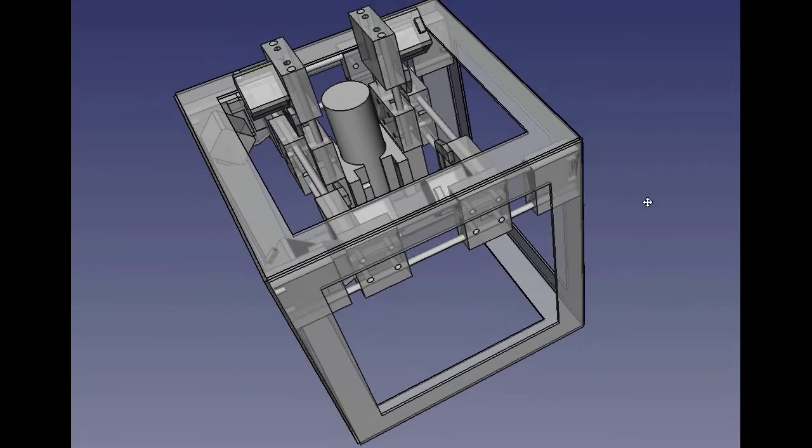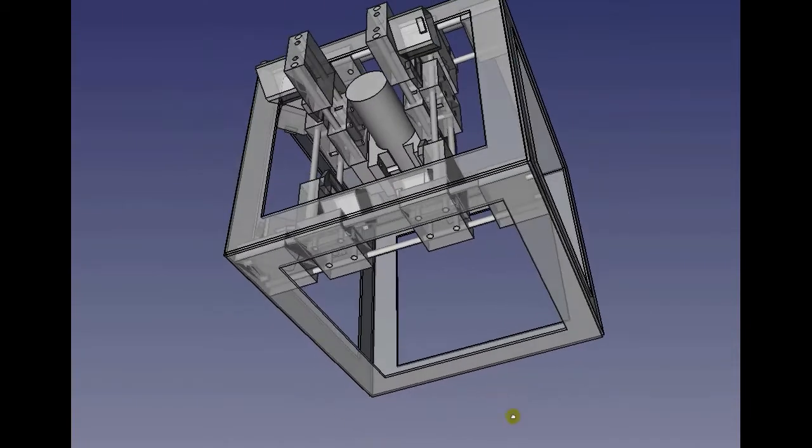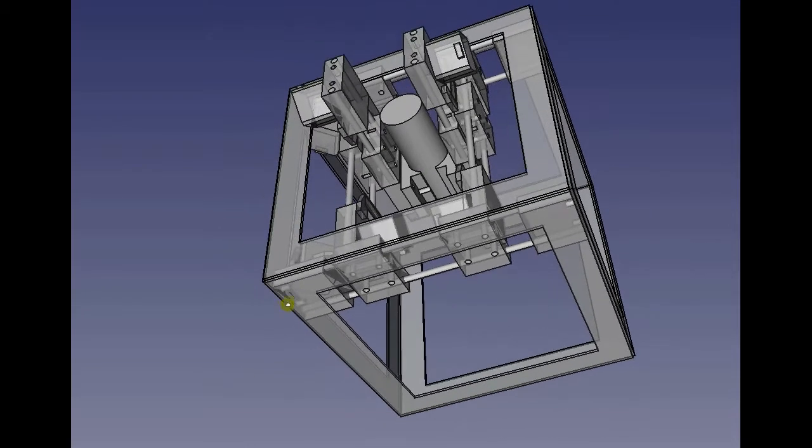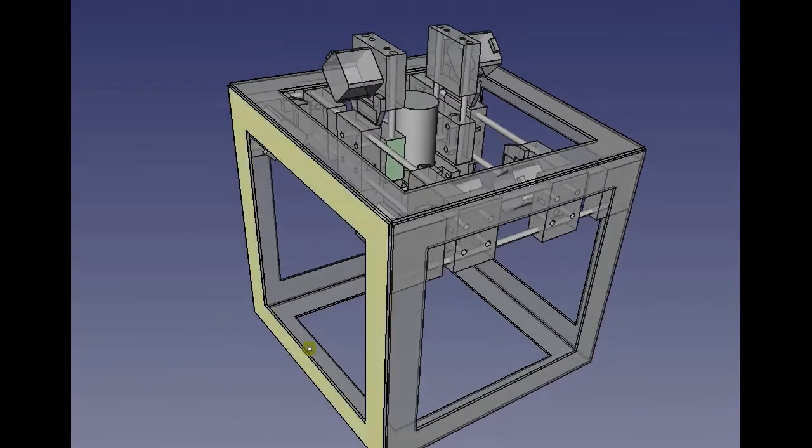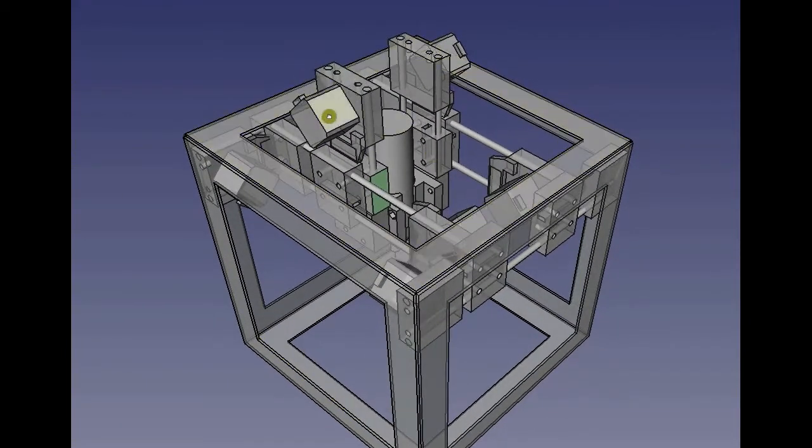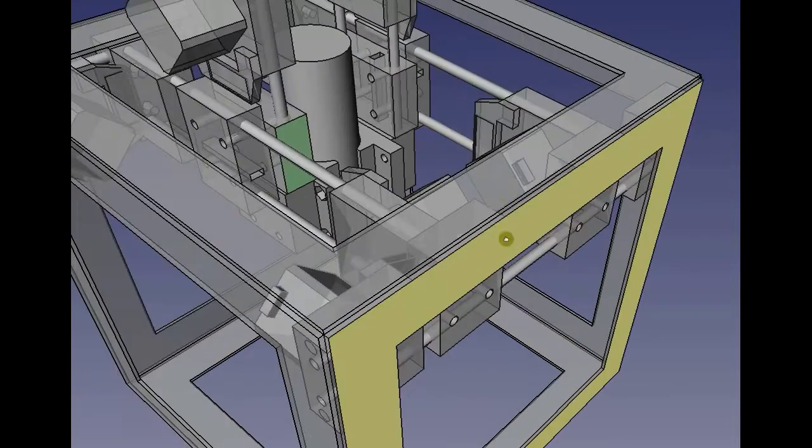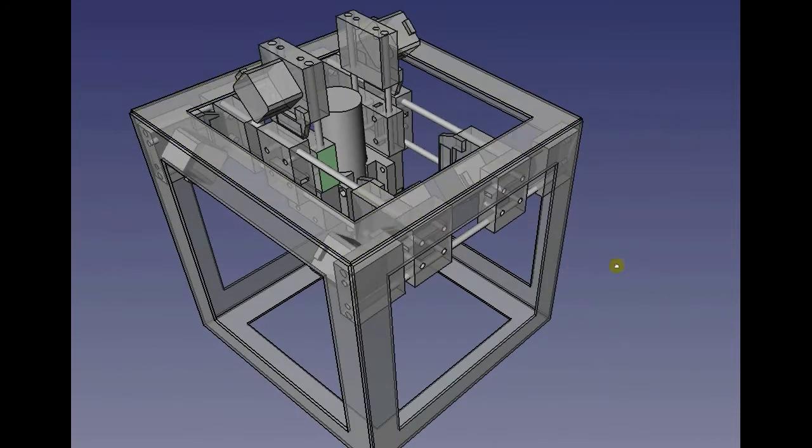And this shows you the construction set approach of the 3D printer construction set, the universal axis system. Basically these axes, which are the same ones, identical ones in the X, Y, and Z directions, they're belt driven with the stepper motors, but they're identical and you can create different configurations like here for the CNC circuit mill and previously you've seen the 3D printer.